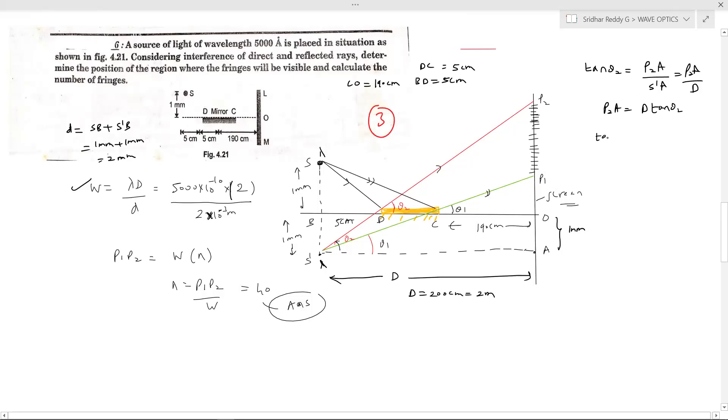Further tan theta 2, we can also write it as tan theta 2 looking at this triangle DP2O. I'll write all the information first. From triangle P2 A S dash I got P2 A equal to this one. Similarly from triangle P2 O D, tan theta 2 should be equal to P2 O by D O. Do we know D O? It is equal to 195 cm.